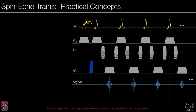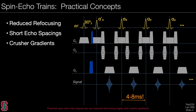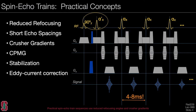Let's look at some practical concepts in spin echo chain sequences. Practically speaking, we often use reduced refocusing flip angles, shortened echo spacings of as low as 4 to 8 milliseconds, crusher gradients, and the CPMG approach, whereby the 90-degree pulse and the refocusing pulses are 90 degrees out of phase. We use the concept of stabilization, whereby the first pulse shown by alpha prime has a slightly different flip angle. Most of these sequences in practice use eddy current correction.